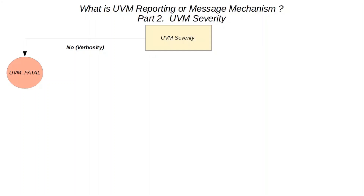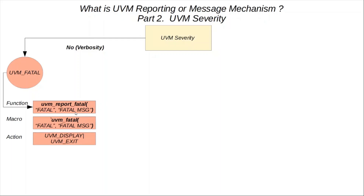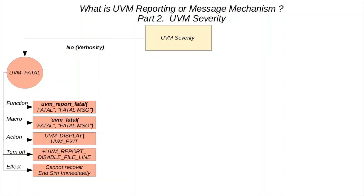UVM_FATAL does not take verbosity as an argument. The method used to log a UVM fatal message is called `uvm_report_fatal`, as shown here. It has five possible arguments — file name, line number, and verbosity — but there are two required arguments: the message ID and the message body. Here, 'fatal' is the ID and 'fatal message' is the body.